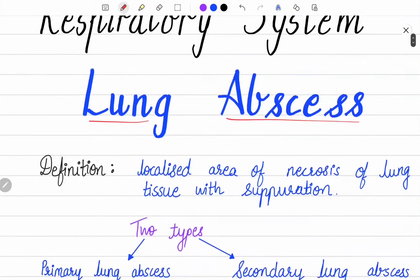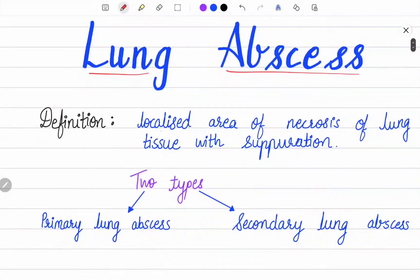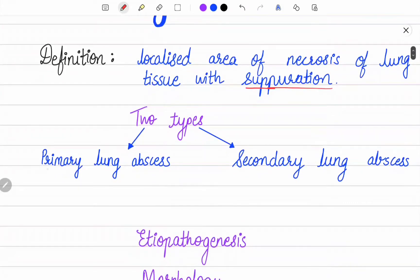The definition: lung abscess is a localized area of necrosis of lung tissue with suppuration. It is of two types - primary lung abscess and secondary lung abscess. Primary lung abscess develops in an otherwise normal lung, and the commonest cause is aspiration of infected material. Secondary lung abscess develops as a complication of some other disease of the lung or from another site.